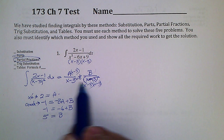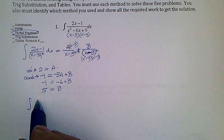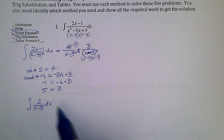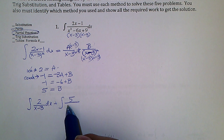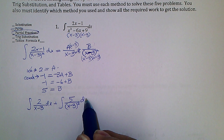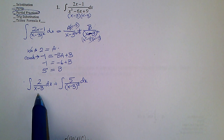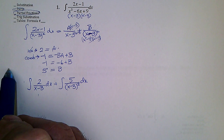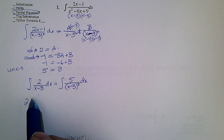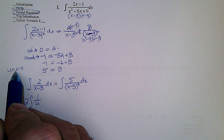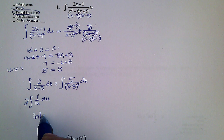So this integral becomes the integral of 2/(x−3) dx plus 5/(x−3)² dx. To finish that, the 2 comes out. You can let u = x−3, so this looks like 2 times the integral of 1/u, and du equals dx. So this is just 2 ln|x−3|.